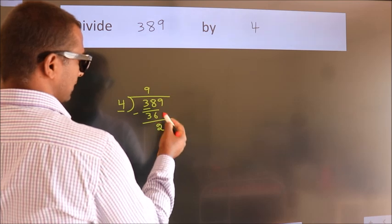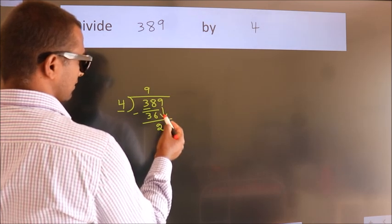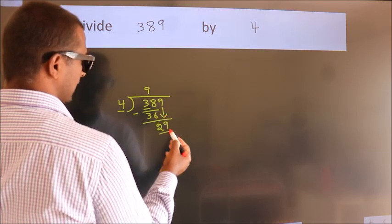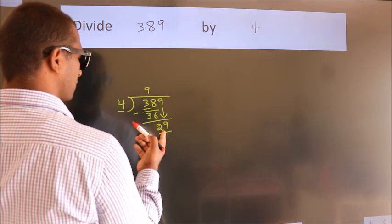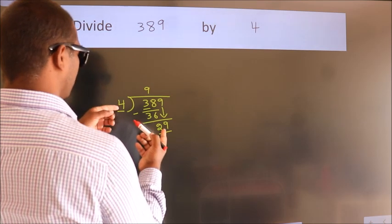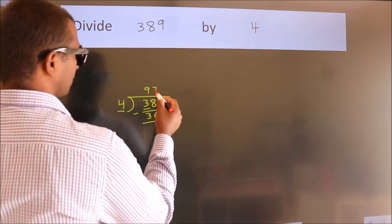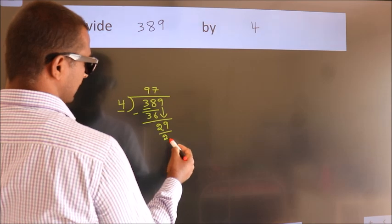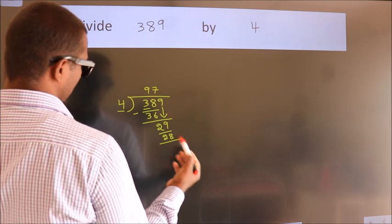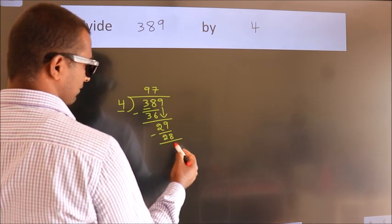After this, bring down the beside number. So 9 down. So 29. A number close to 29 in 4 table is 4 sevens, 28. Now we subtract. We get 1.